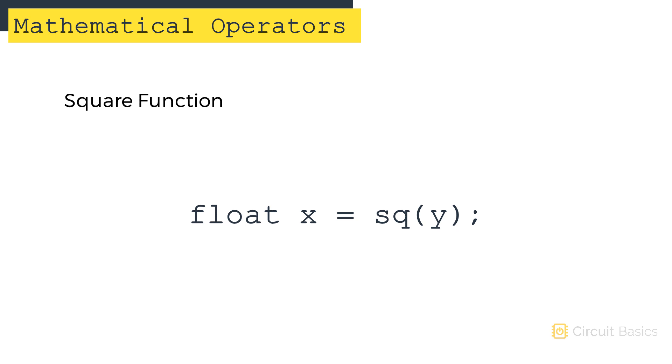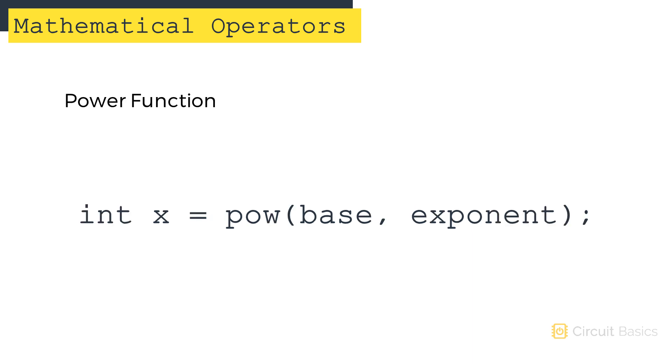There's also a function for calculating the square of a number. This calculates y squared. The power function calculates the value of a base raised to the power of an exponent. The syntax looks like this. So for example, if we want to find 10 to the power of 8, we would put 10 as the first argument and 8 as the second argument.